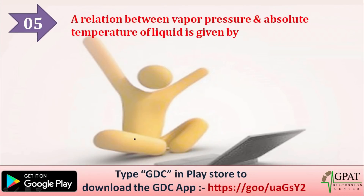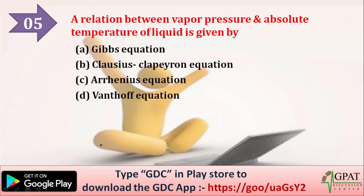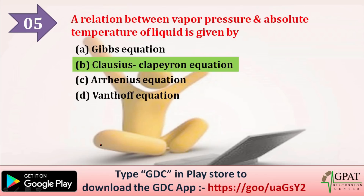Next question: a relation between vapor pressure and absolute temperature of liquid is given by which equation? Option A: Gibbs equation. Option B: Clausius-Clapeyron equation. Option C: Arrhenius equation. Option D: Van't Hoff equation. The correct answer is the Clausius-Clapeyron equation.